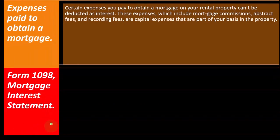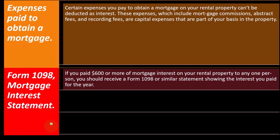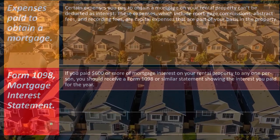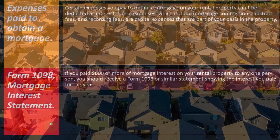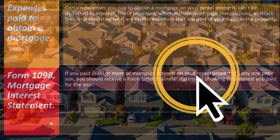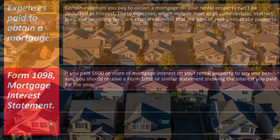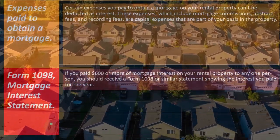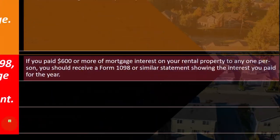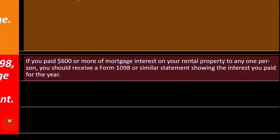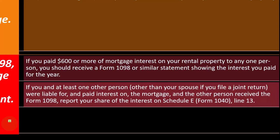Form 1098, Mortgage Interest Statement. If you paid $600 or more of mortgage interest on your rental property to any one person, you should receive a Form 1098 or similar statement showing the interest you paid for the year. You're probably familiar with that form for your personal residence, but for rental property it wouldn't be deducted on Schedule A — it would show the interest paid for the business property.